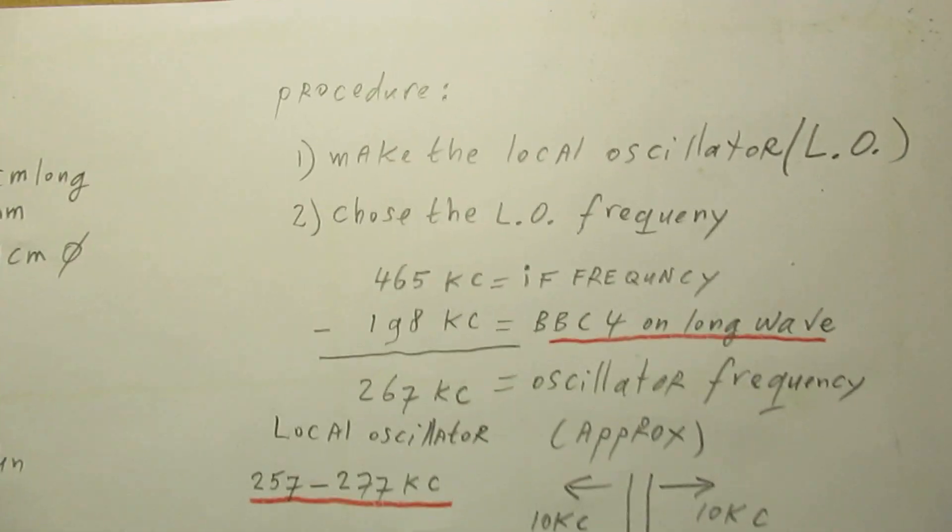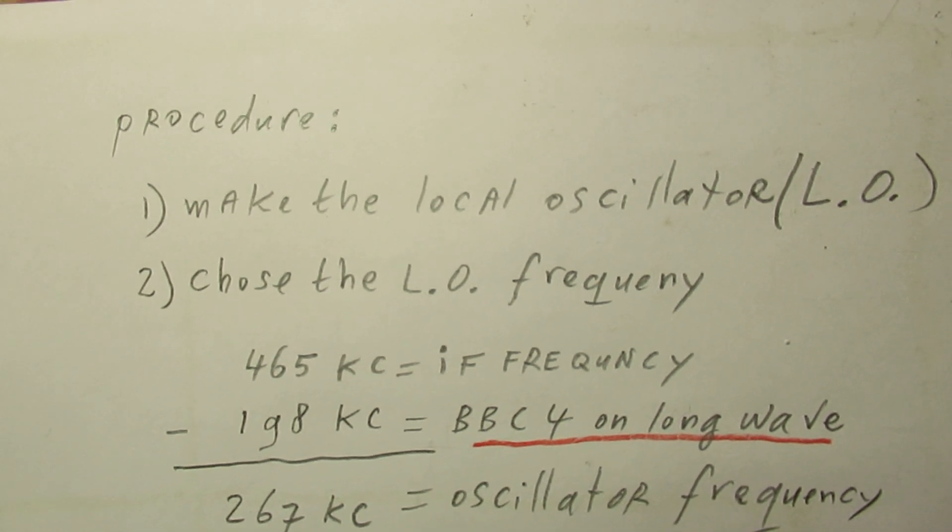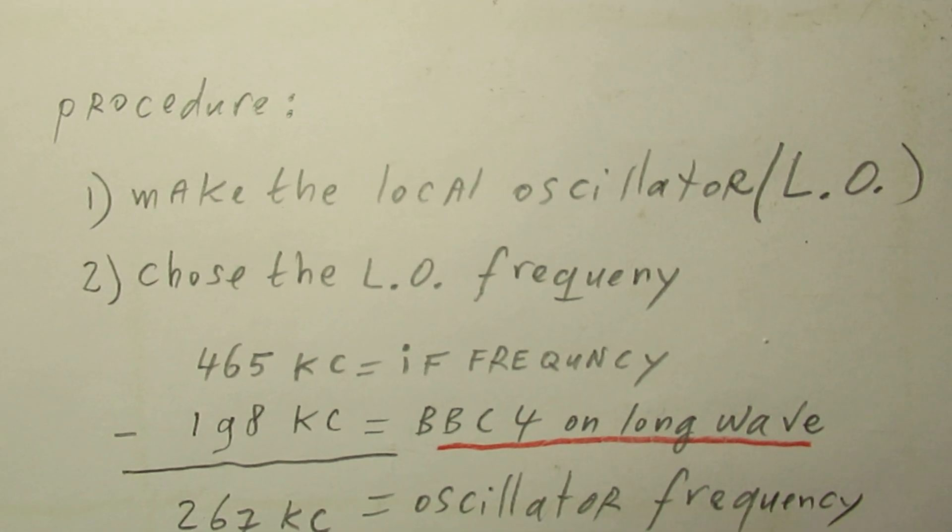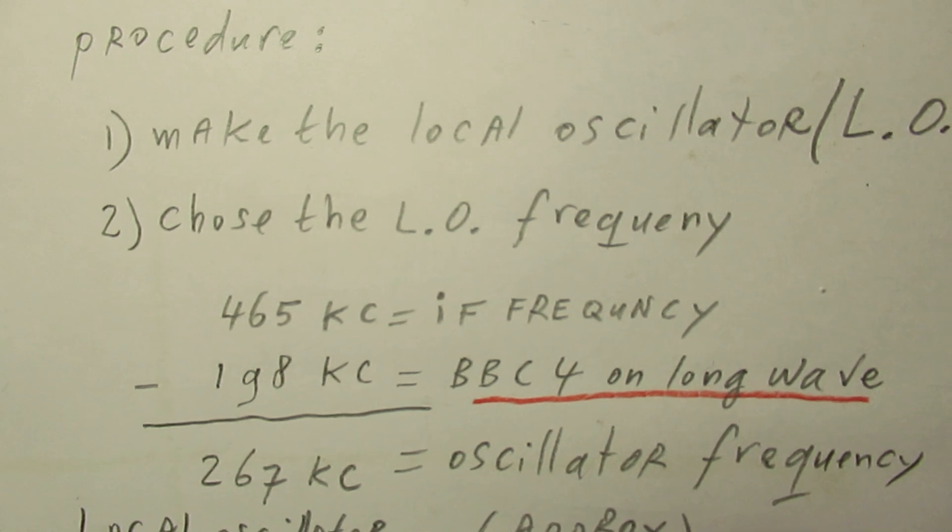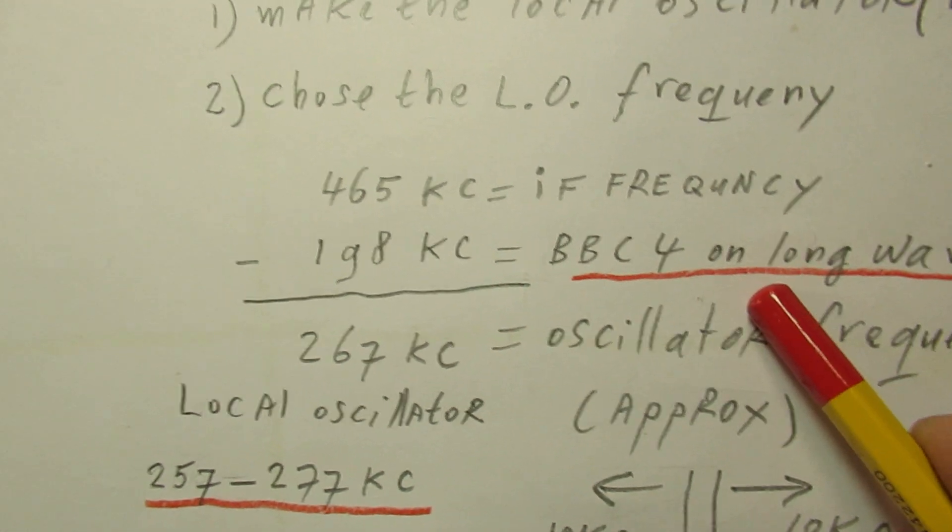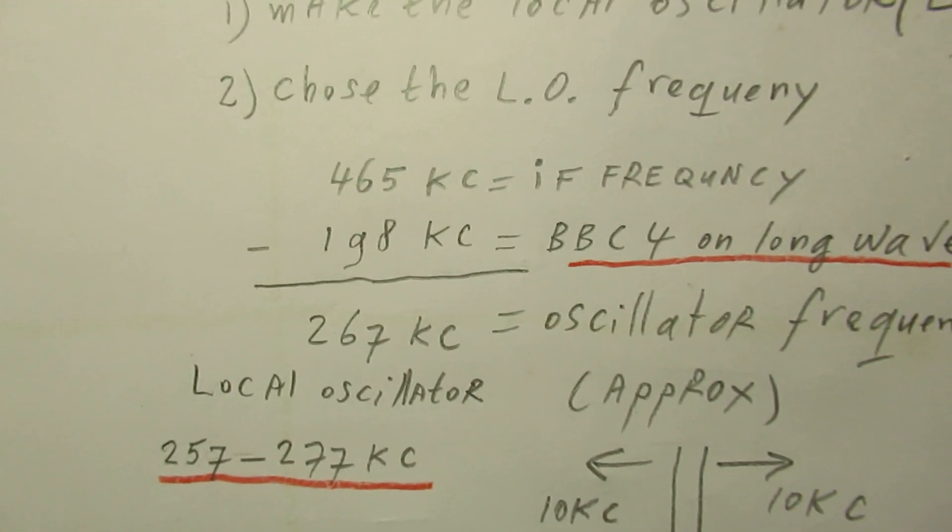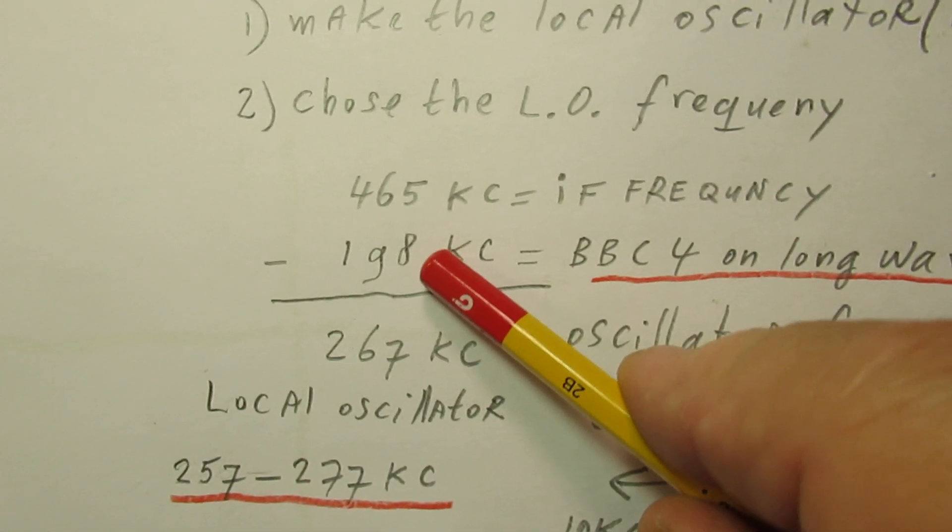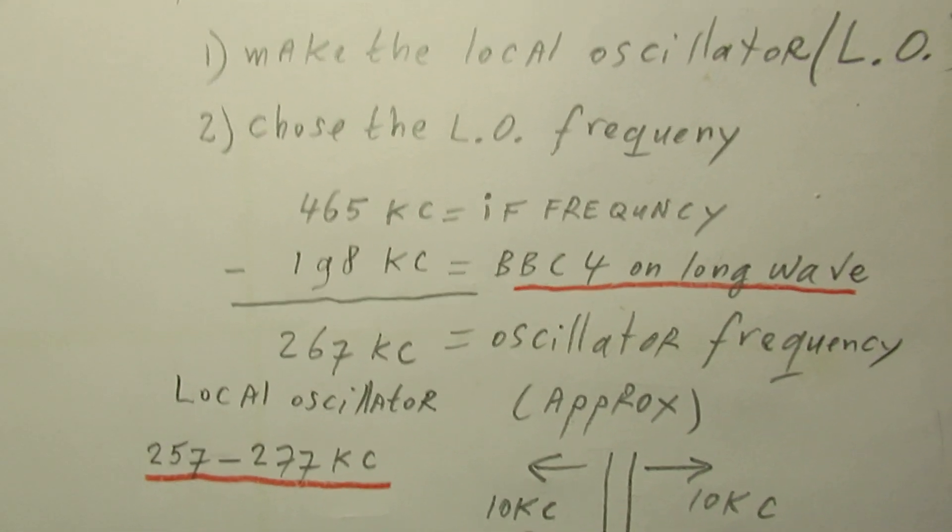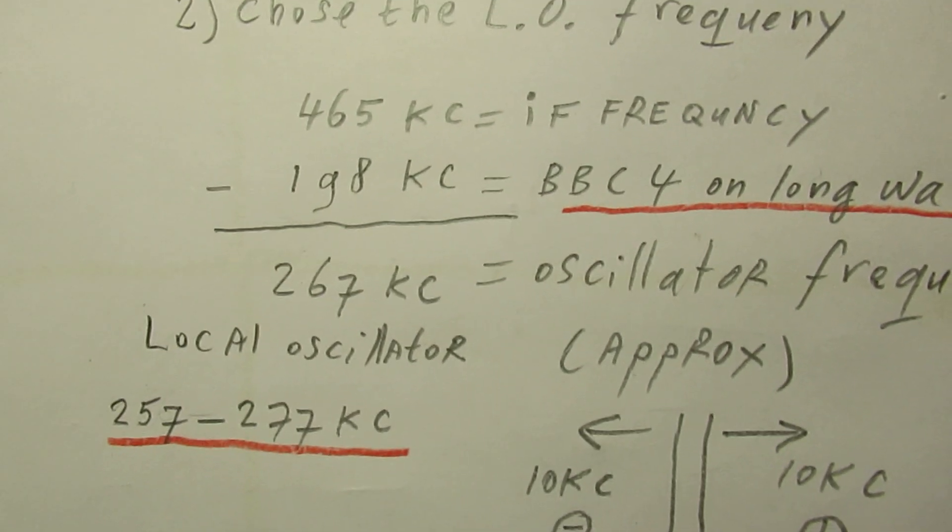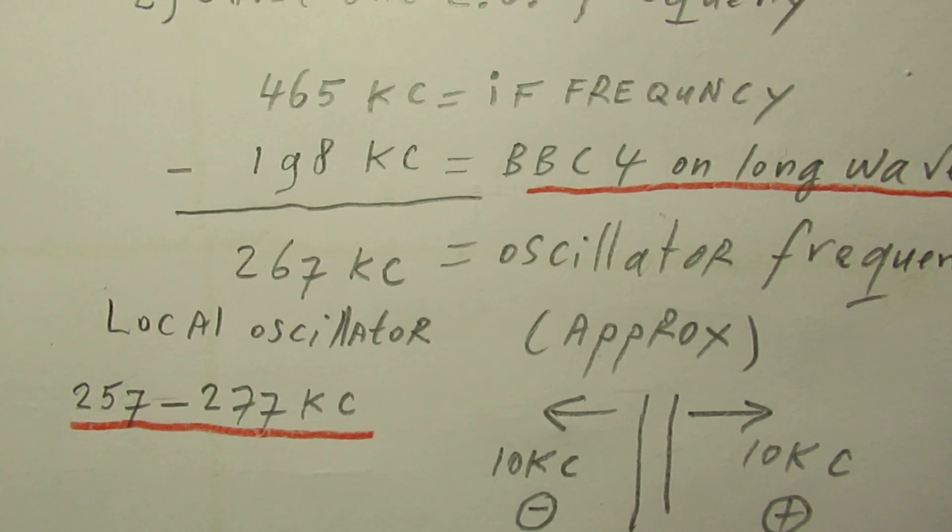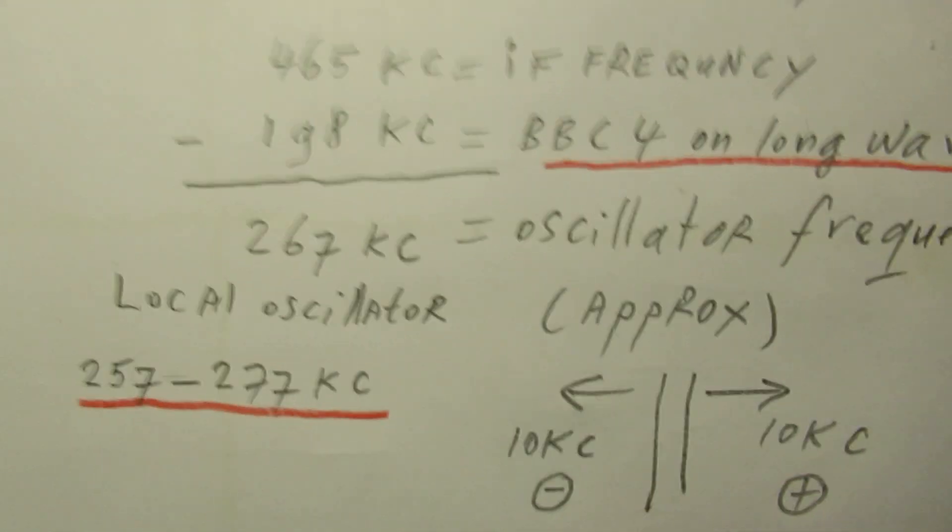So what is the procedure? At first make the local oscillator and look for the radio station that you want to receive. And I've made an example. And it's here. So this is the procedure. Make the local oscillator. I've showed the schematic. And I will also give the schematic in the text box. Choose the frequency of the local oscillator. And this is only an example. I have now chosen BBC4. It's on 198 kilocycles. And you must subtract that from the IF frequency and then you know where your local oscillator has to work. That must work around 267 kilocycles in this case.